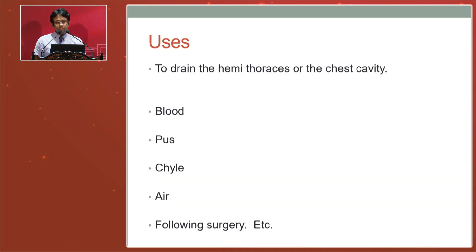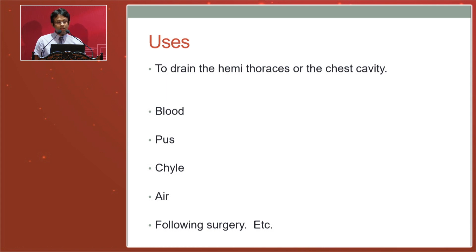With regard to the uses, as you all know, the IC tube drain system is used to drain the thoracic cavity, which is either unilateral hemithorax, bilateral hemithorax, or the chest cavity in general. The main use is to remove blood, or in cardiothoracic surgery, we routinely put IC drains following the surgical procedure.